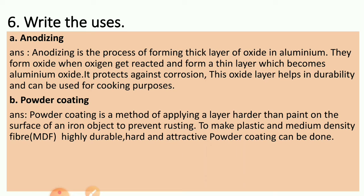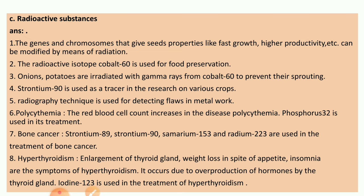B: Powder coating. Powder coating is a method of applying a layer harder than paint on the surface of an iron object to prevent rusting. To make plastic and medium density fiber highly durable, hard and attractive, powder coating can be done.